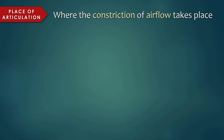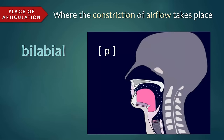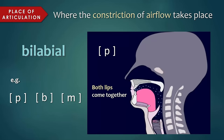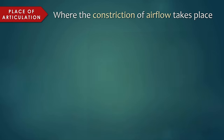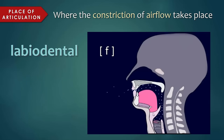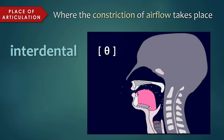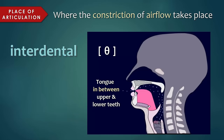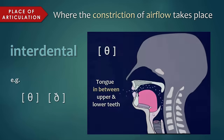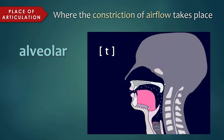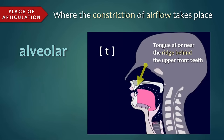Place of articulation refers to where in the vocal tract the constriction of airflow takes place. Bilabial sounds are produced with both lips, like p, b, m. Labiodental sounds are produced with the upper teeth and the lower lip, such as f, v. Interdental sounds are produced with the tongue in between the upper and lower teeth, such as th. Alveolar sounds are produced with the tongue at or near the ridge right behind the upper front teeth, such as t, d, s.